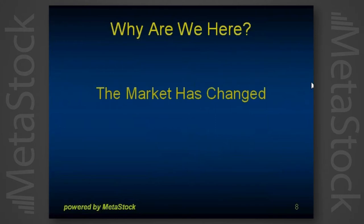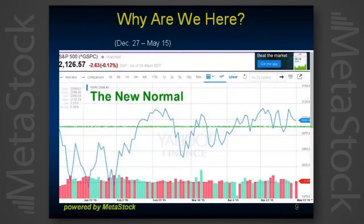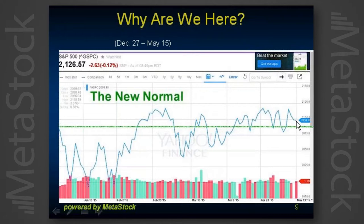So why are we here? The market has changed and I want to talk about that change. We're all in the same boat — this is what I call the new normal. I put the green line in just to show how flat it is. From December through May, the market isn't going anywhere. What I'd really like you to take note of is that the overall bias of the market is changing every few days — the longest stretch seems to be about four days before the market switches. At the end of the day, the market is down — I think 0.9% gain on the S&P for the first five months.